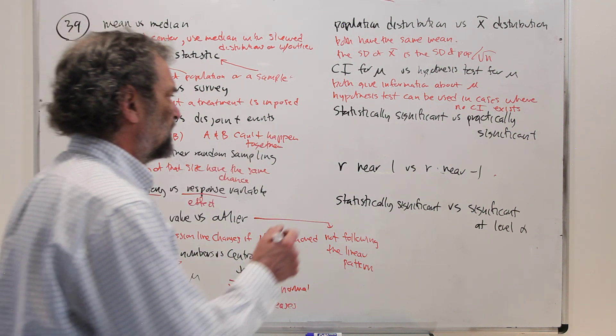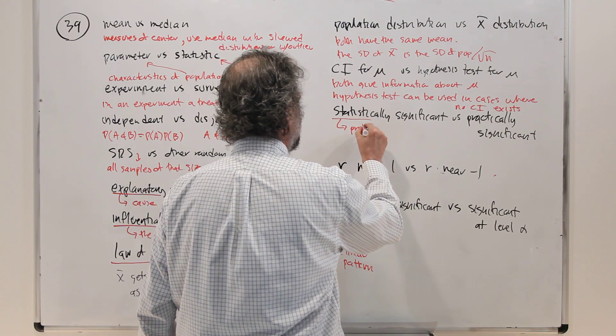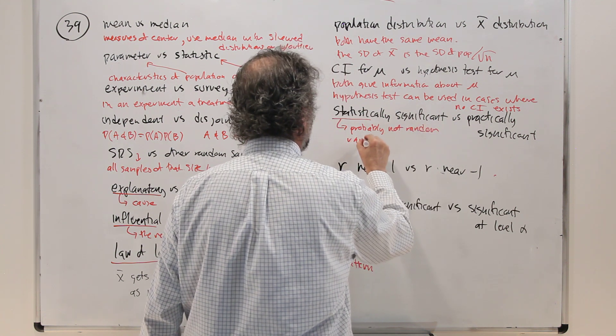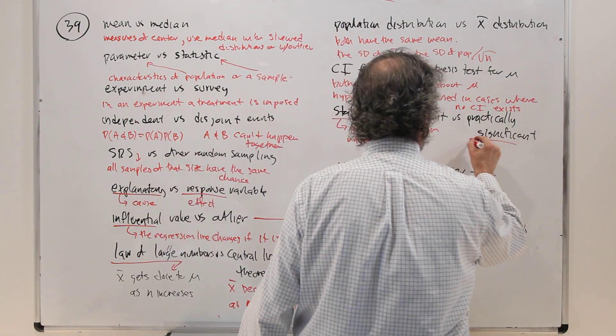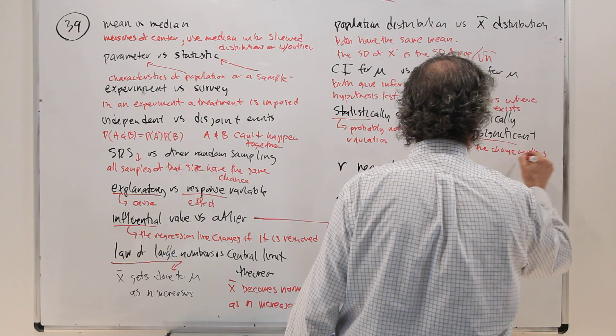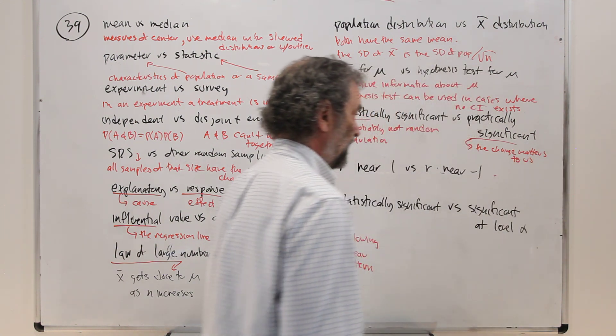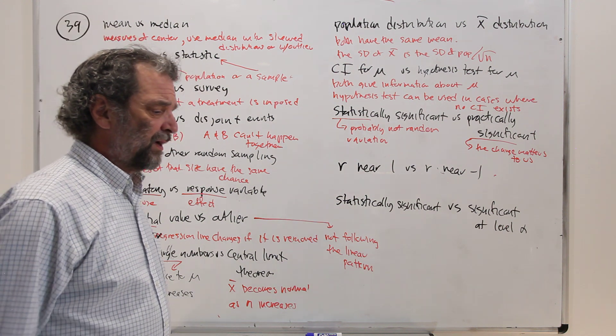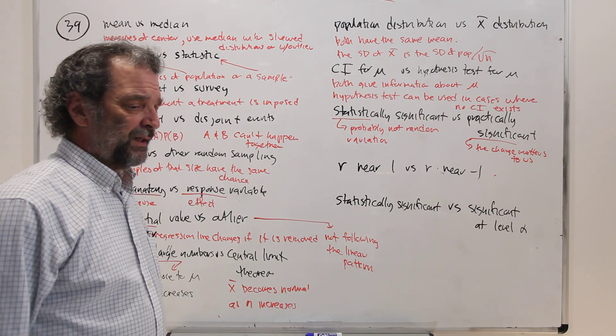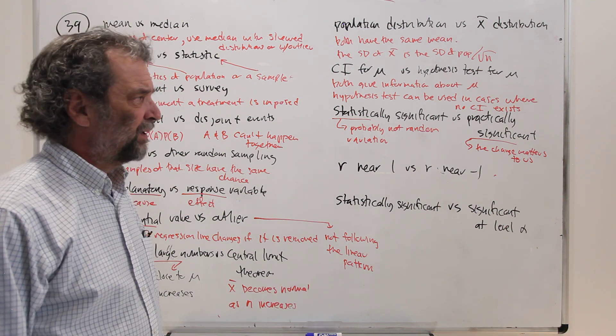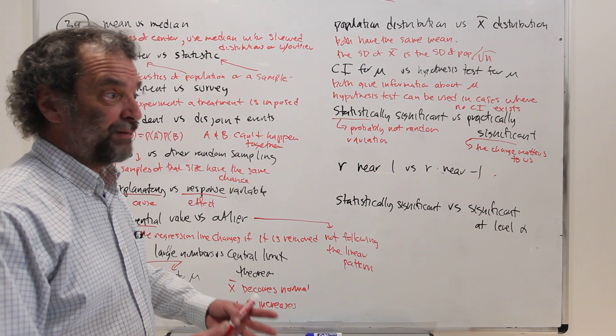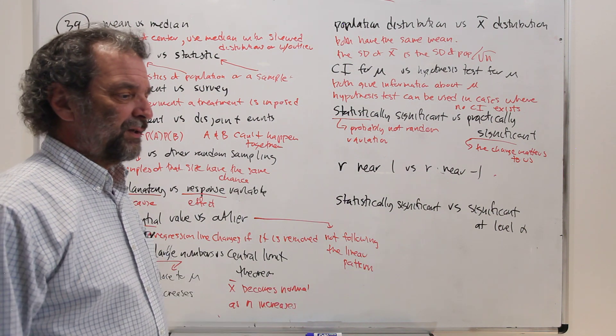Statistically significant versus practically significant. So statistically significant says that what we see is probably not just random variation. Practically significant says the change matters to us. So if you were, say, trying to see whether a particular new kind of medicine reduces fever, and you say you have a fever of 100 degrees, and it manages to reduce fever down to 99.5, you're still pretty sick, so you're not too happy about it. So even though we could prove that that's not random variation to get from 100 to 99.5 because you took this medicine, it wouldn't have any practical significance to you because you really needed to do more.